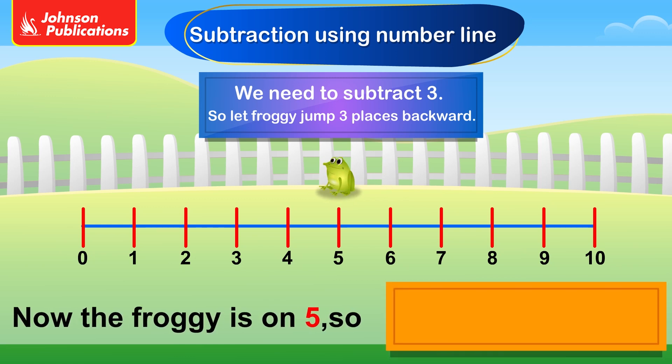Now Froggy is on 5. So, 8 minus 3 equals 5.